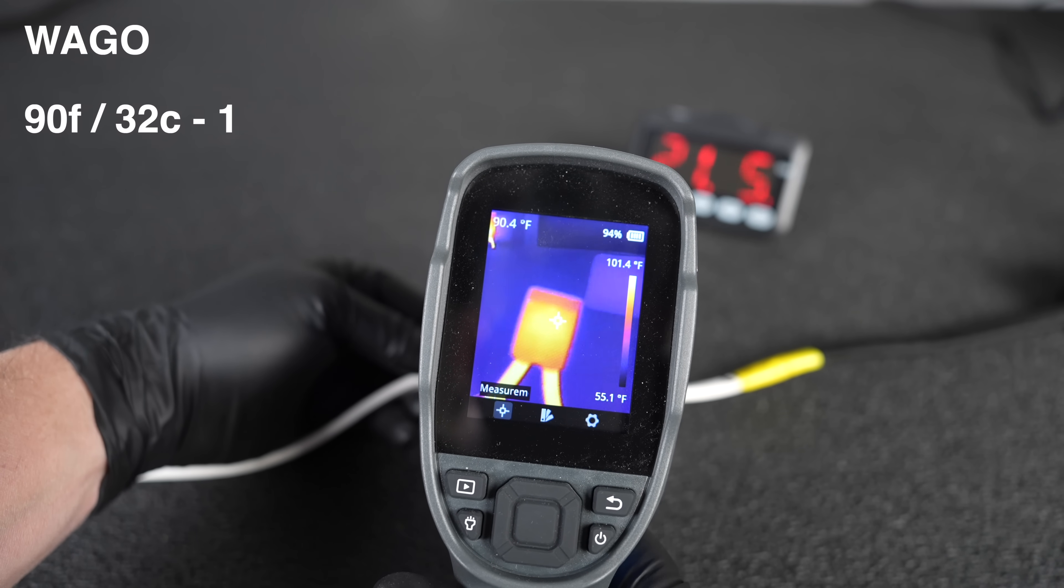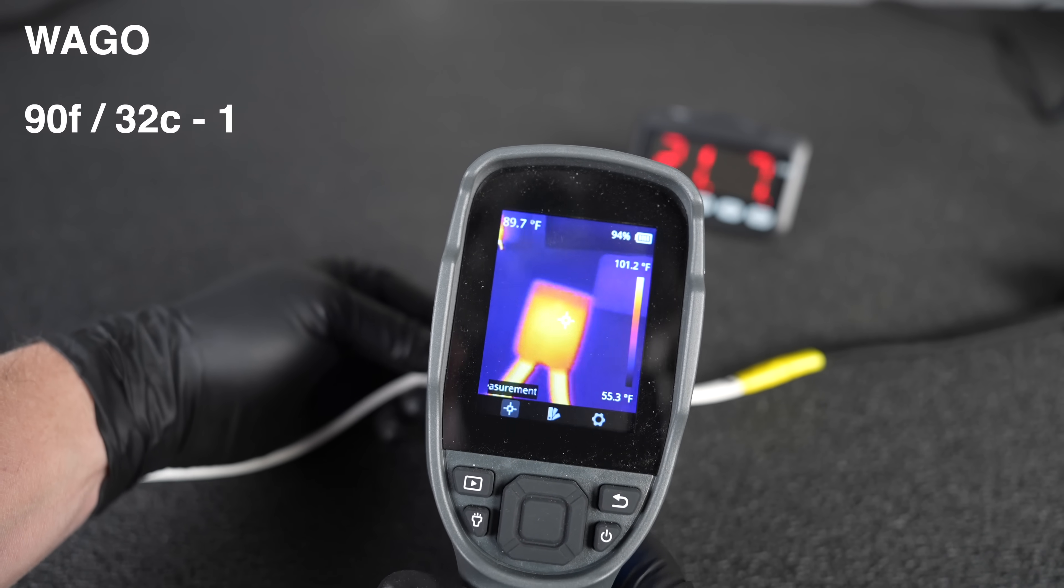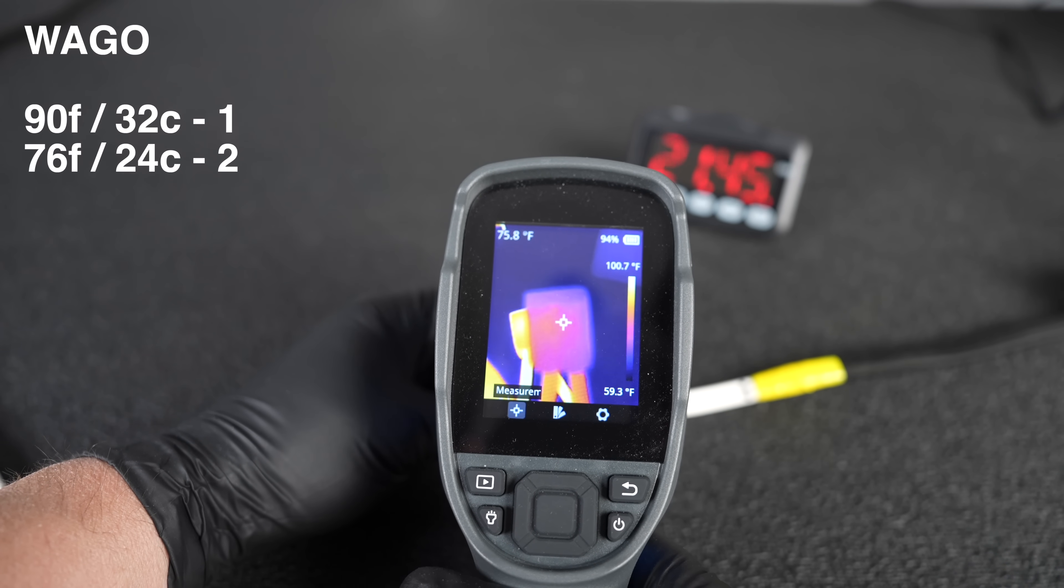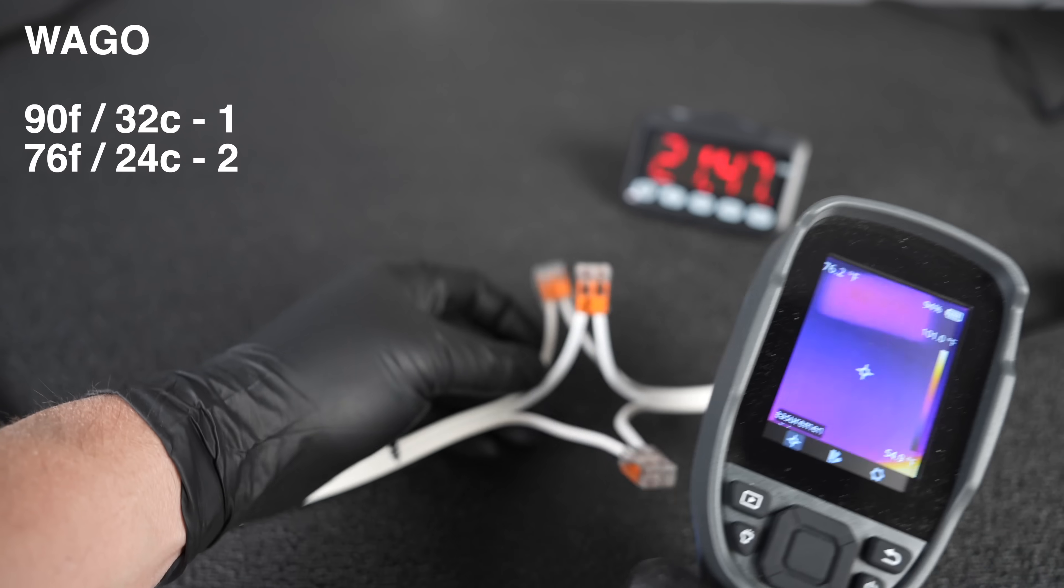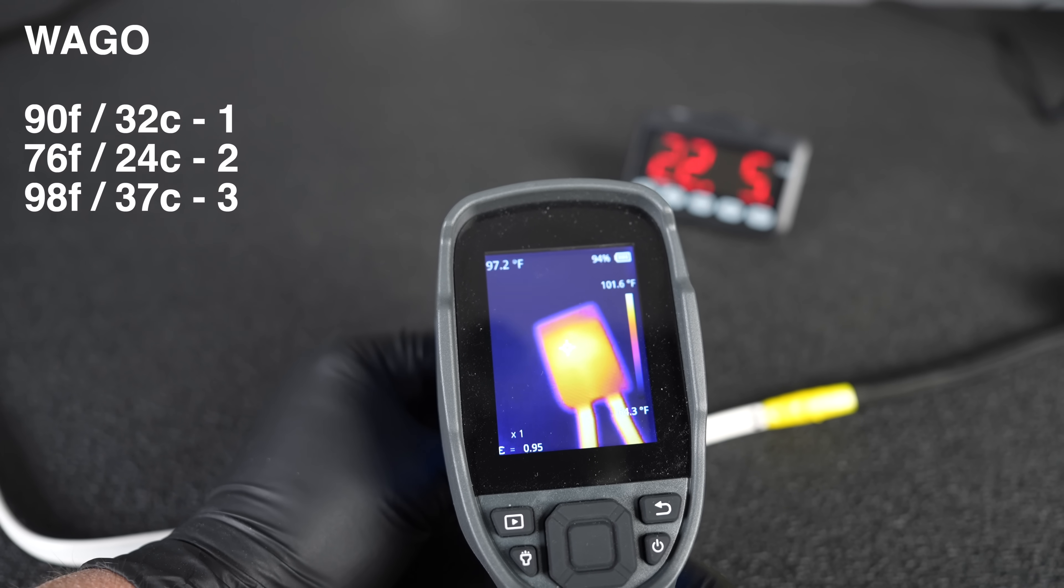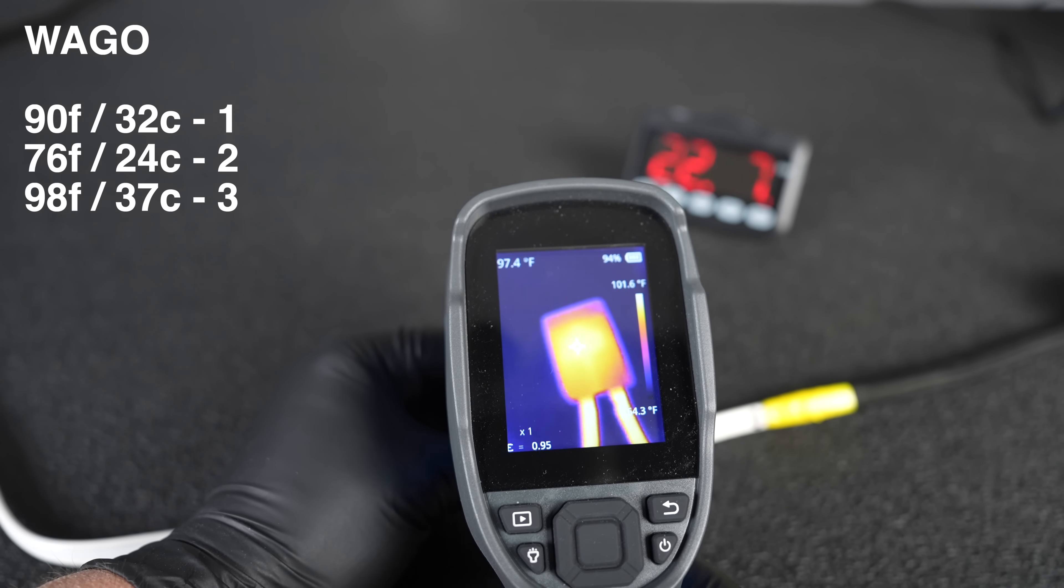At the 20 minute mark, our first connector is getting 90 degrees Fahrenheit or 32 degrees Celsius. Our middle connector, which is likely our ground, is reading just 76 degrees Fahrenheit or 24 degrees Celsius. And our third connector is reading 98 degrees Fahrenheit or 37 degrees Celsius.